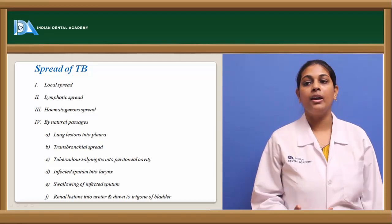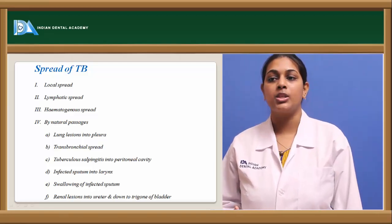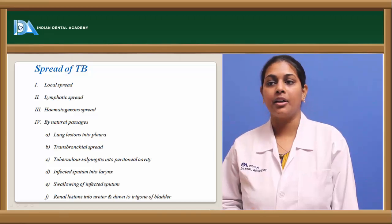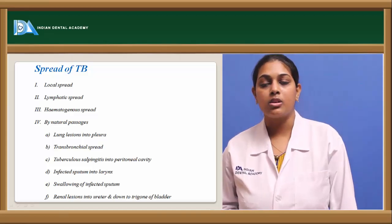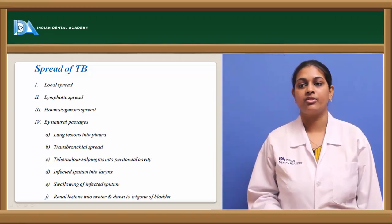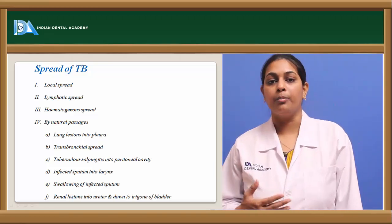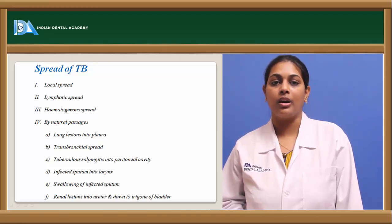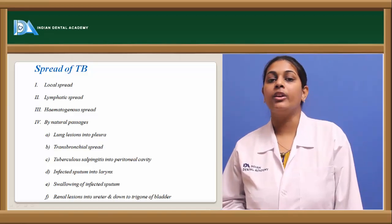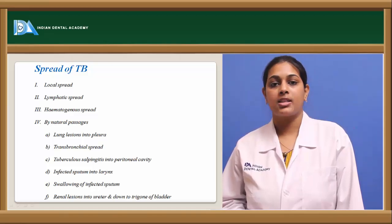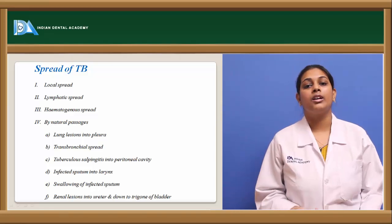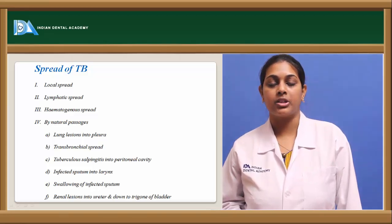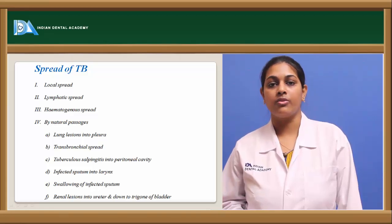Among natural passages, it could be lung lesions spreading into the pleura or via transbronchial spread within the bronchus. It could also be through tuberculosis salpingitis into the peritoneal cavity, or the bacilli could be carried into the peritoneal cavity. Additionally, swallowing of infected sputum — through accidental swallowing or contamination in lab procedures — is one reason. Post-mortem infections are also a reason for swallowing infected sputum.